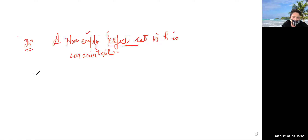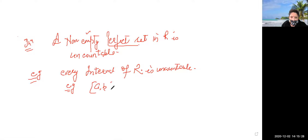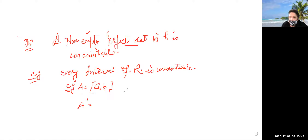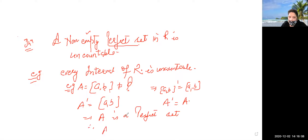For example, every interval of R is uncountable. Let A be a closed interval [a, b]. We already know the derived set of any set is always a closed set, so A-dash equals [a, b] equals A. It implies A is a perfect set. Since A is a non-empty perfect set, therefore A is uncountable.